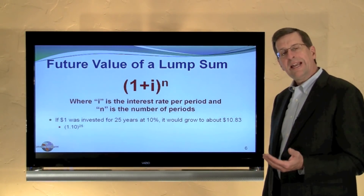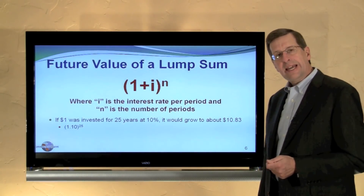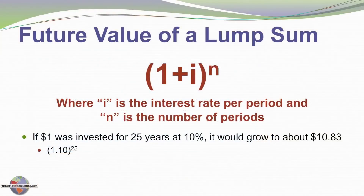There's a way to capture this mathematics by formula. It's important to recognize (1 + i)^n, where i is the interest rate per period and n is the number of periods. We can apply this and say if $1.00 is invested for 25 years, how much will it grow to? The answer is $10.83, calculated as 1.1 to the 25th power, giving a factor of 10.83.